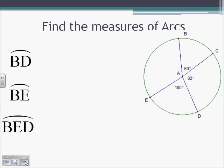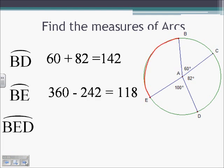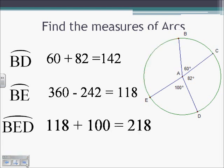Finding measures of arcs: arc BD contains BC and CD, so that's 60 plus 82, giving 142. To find arc BE: arc from B to C to E is 142 plus 100 (ED) equals 242. Taking 360 minus 242 gives arc BE equals 118. Then arc BED equals arc BE plus ED, which is 118 plus 100, giving 218.